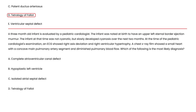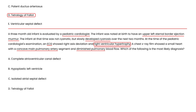One last clinical vignette. A three-month-old infant is evaluated by a pediatric cardiologist. The infant was noted at birth to have an upper left sternal border ejection murmur. The infant was not initially cyanotic but slowly developed cyanosis over two months. EKG showed right axis deviation and right ventricular hypertrophy. Chest X-ray showed a small heart with a concave main pulmonary artery and diminished pulmonary blood flow — those diminished pulmonary vascular markings. The most likely diagnosis: Tetralogy of Fallot.